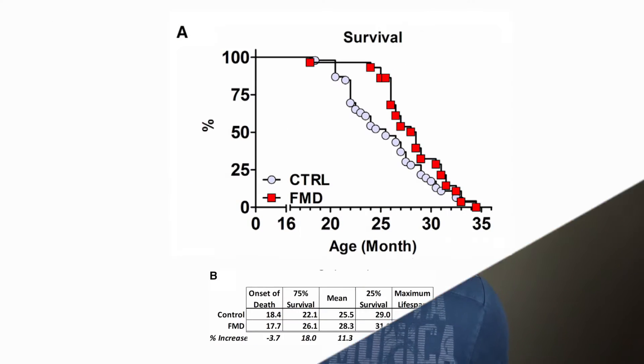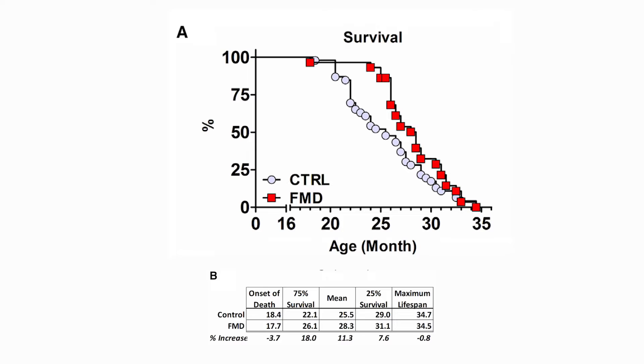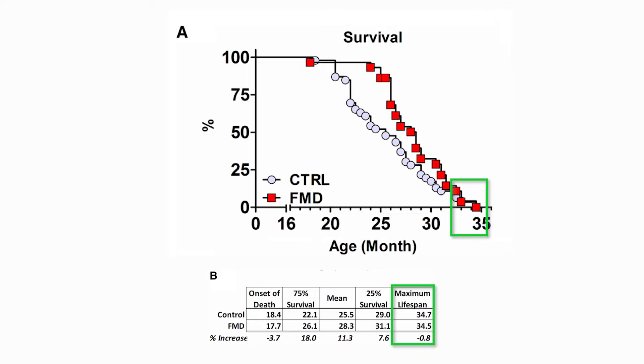In figures 5A and B, they look at lifespan — how long do these mice survive compared to their controls? It seems that fasting mimicking diet or fasting has a positive impact on the average lifespan, so more mice are living longer. However, the maximum lifespan — the absolute oldest mouse or oldest mice — did not change from control. The control mice live just as long at their maximum levels, as opposed to their average levels where the control mice did worse than the fasting mice.